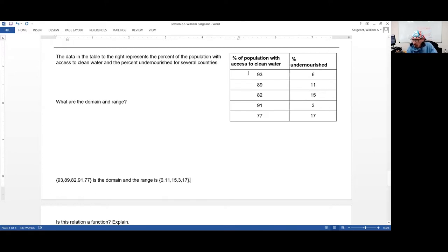Now in that table, 93 only shows up once. It's only paired with 6. 89 only shows up once. It's only paired up with 11. And the same goes with the 82, 91, and the 77. These are all, each X is being paired with one Y. So we do have, not only that it's a relation, but more specifically, it is a function.